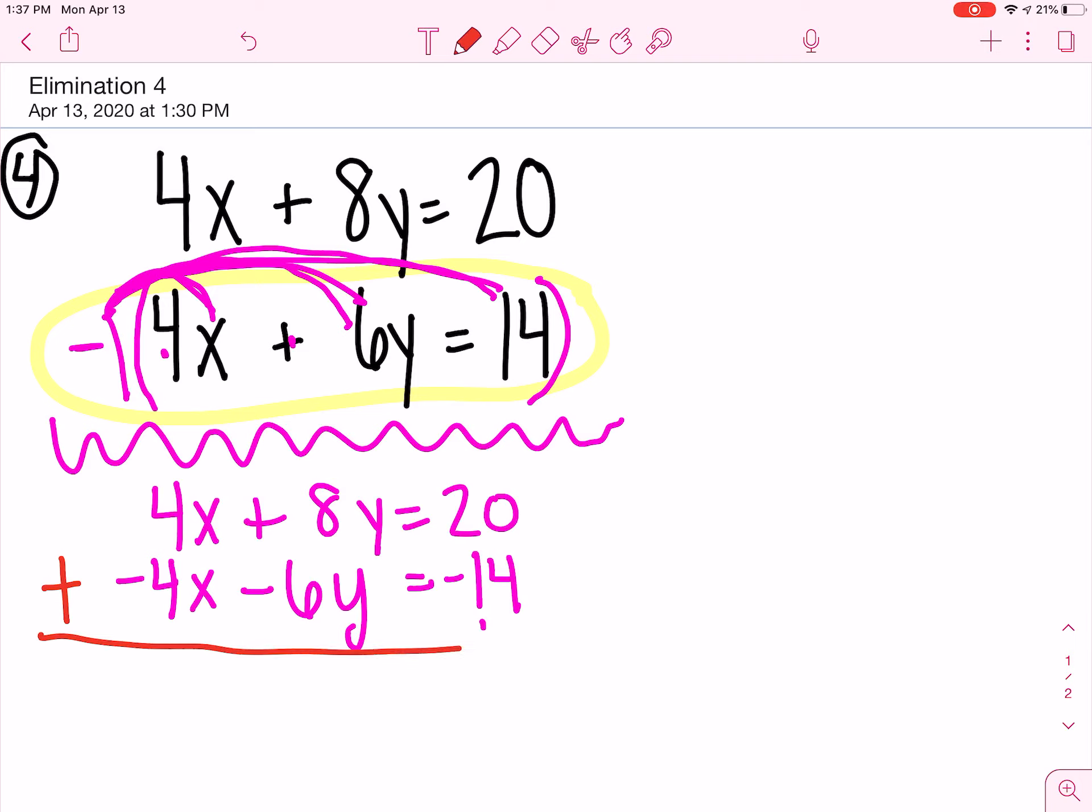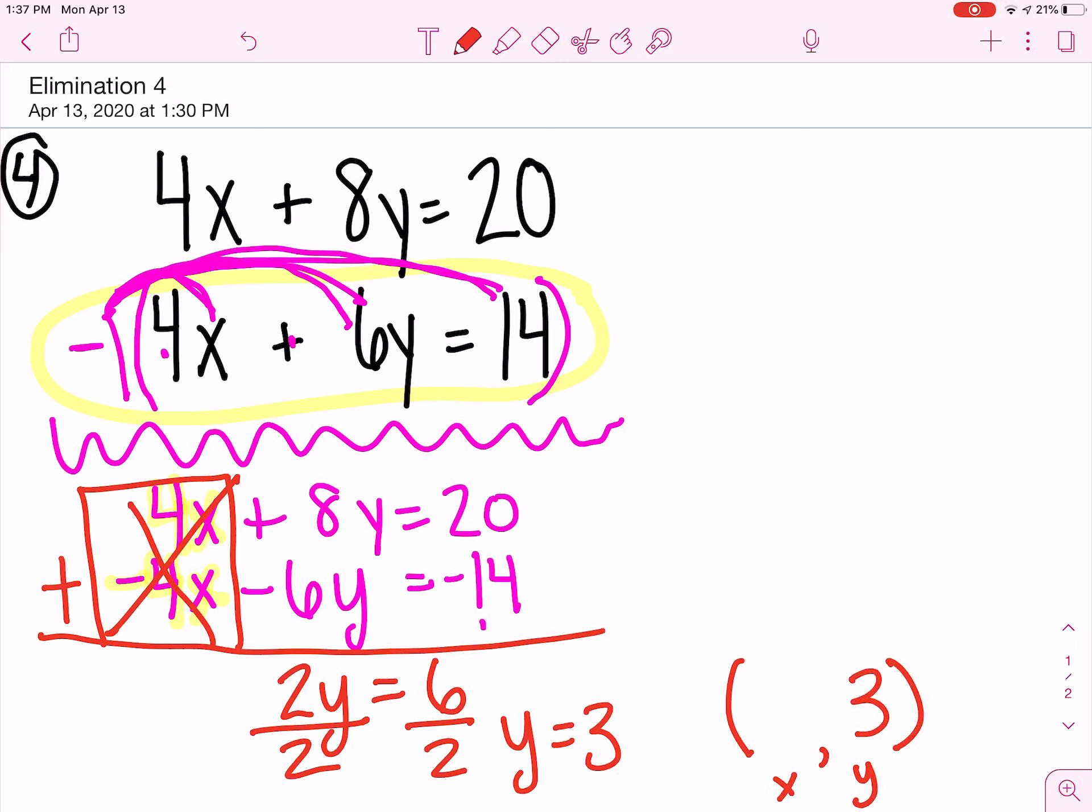Now, I'm going to actually switch back to our red color because we're ready to do our work. We're ready to add these two equations because we have our opposites now. So, it looks like 4x plus negative 4x eliminates, 8y plus a negative 6y is going to be 2y. 20 plus a negative 14 is going to be 6. When I divide both sides by 2, y equals 3. So, I found my y variable.